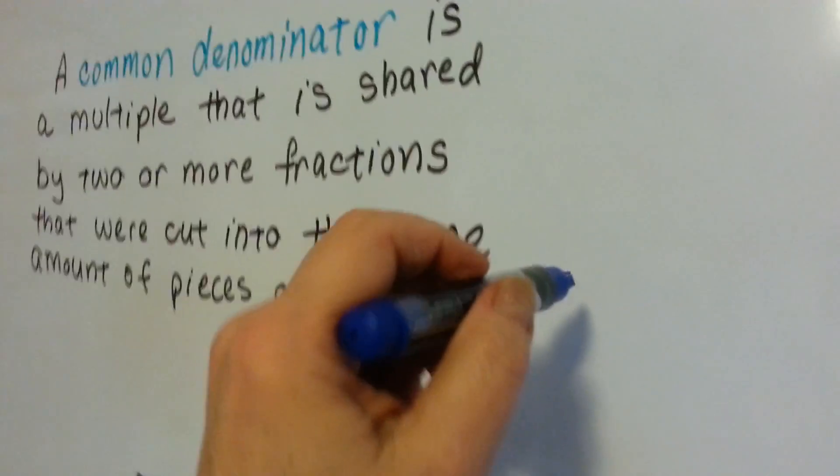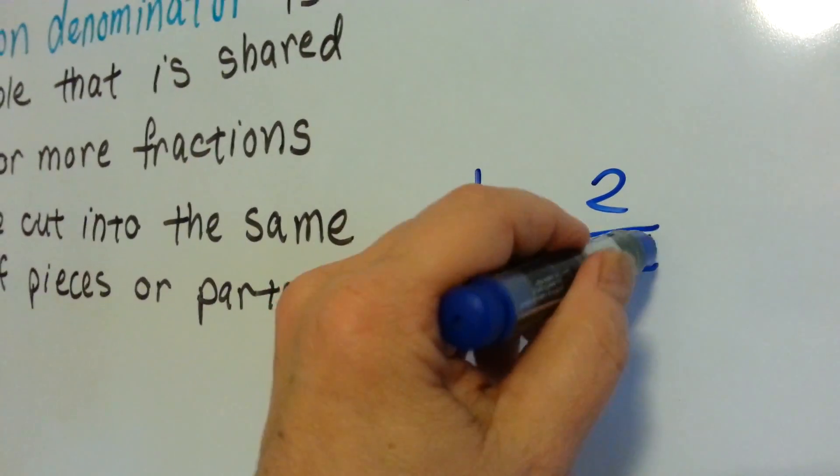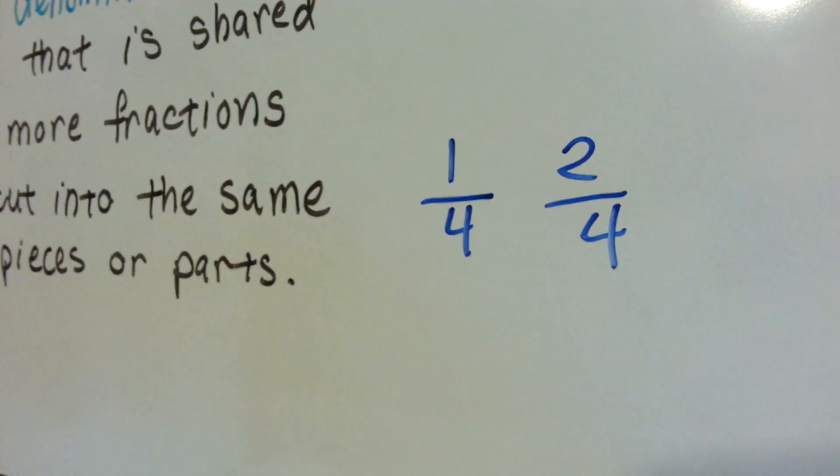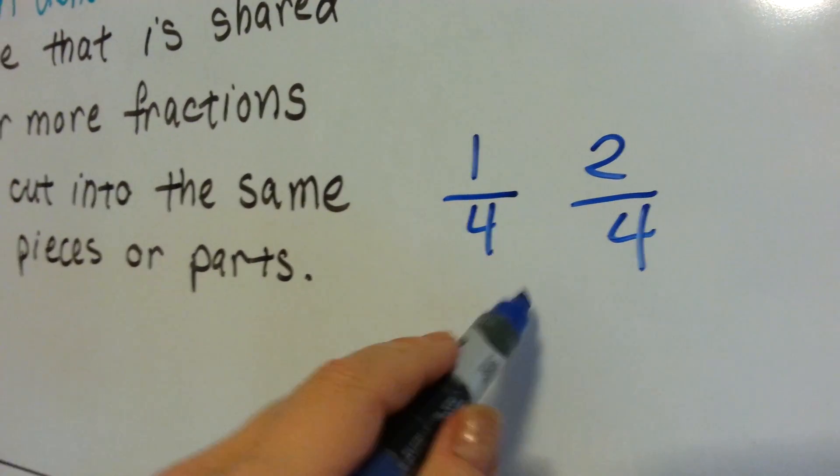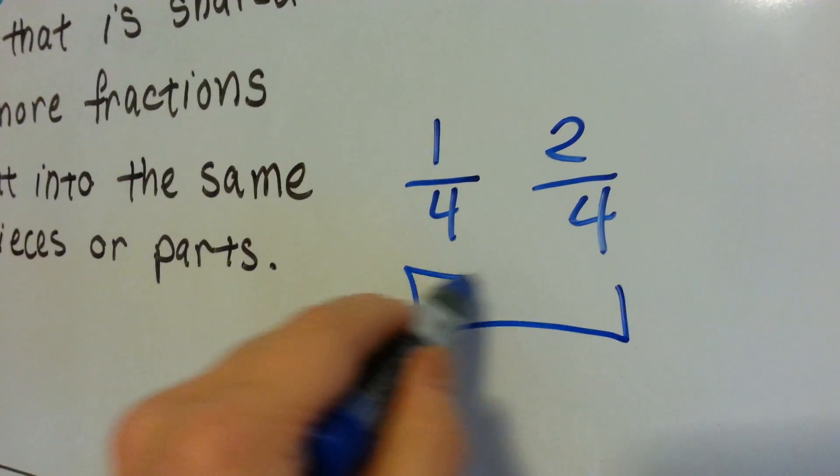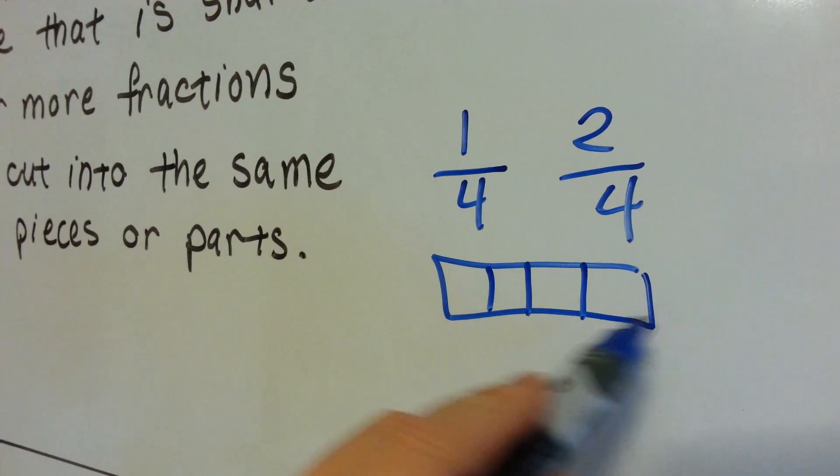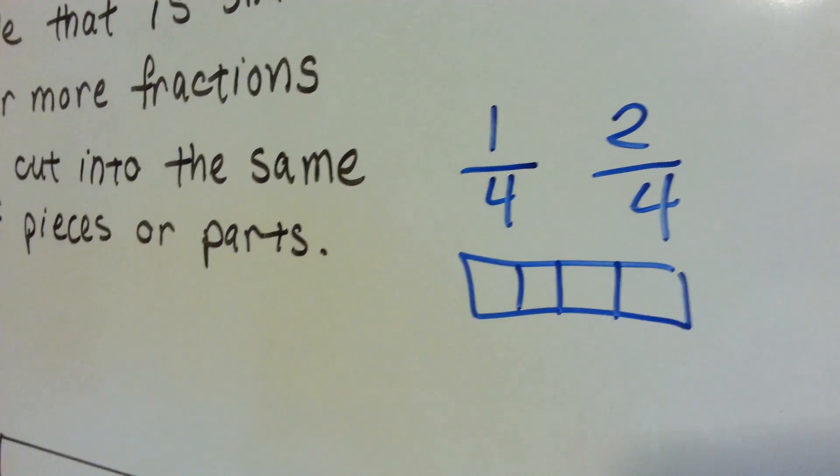If two fractions, let's say 1 fourth and 2 fourths, both have a 4 for the denominator, then they both have common denominators with each other and they represent something that was cut into 4 parts. So whatever the fraction is, candy bar, loaf of bread, whatever, they represent something that was cut into 4 parts.